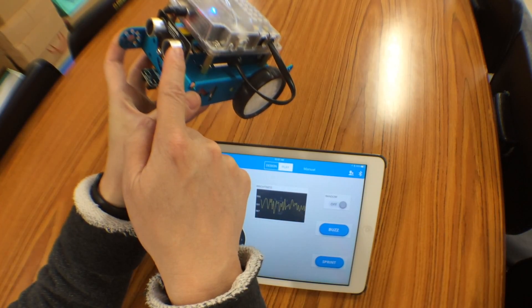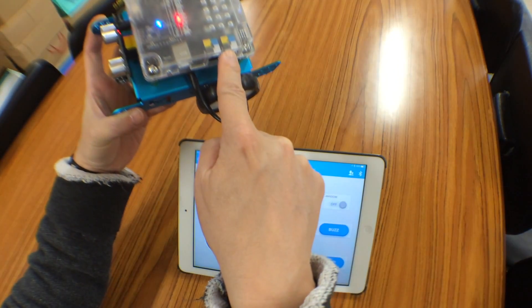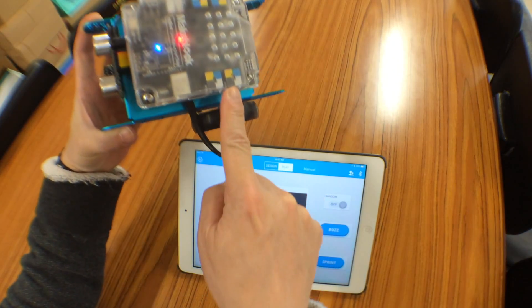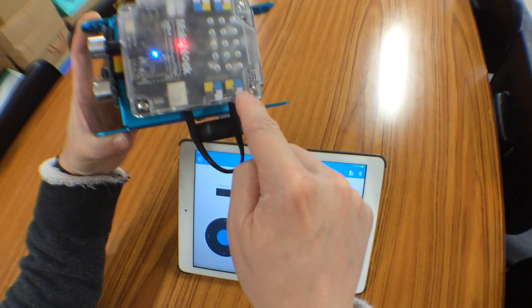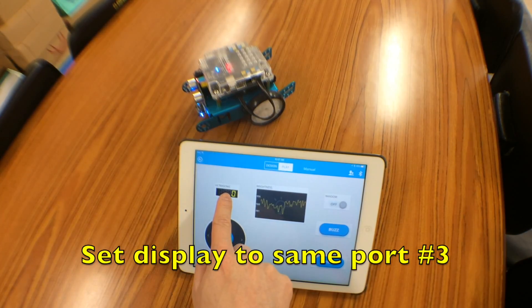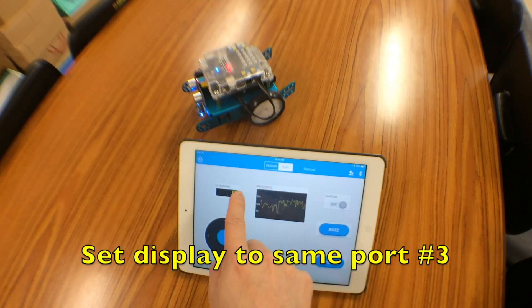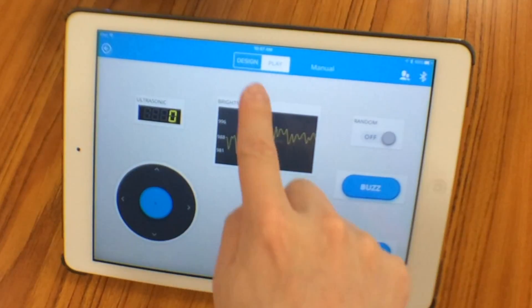You can see that this ultrasonic sensor cable is connected to port number three. This is port number three. We have four ports on the AirBot, and we have to set the ultrasonic display on the AirBot to the same port as the cable.